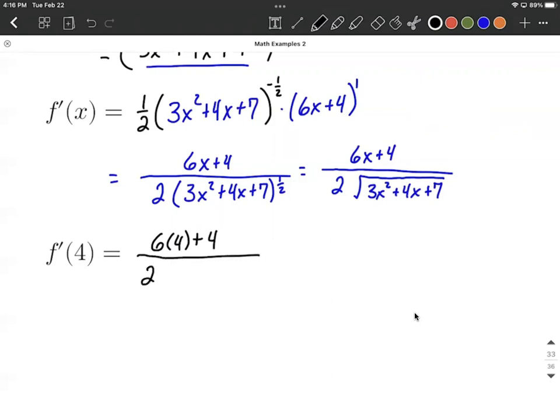All over, we have 2 comes along, the square root of 3 times 4 squared plus 4 times 4 plus 7.